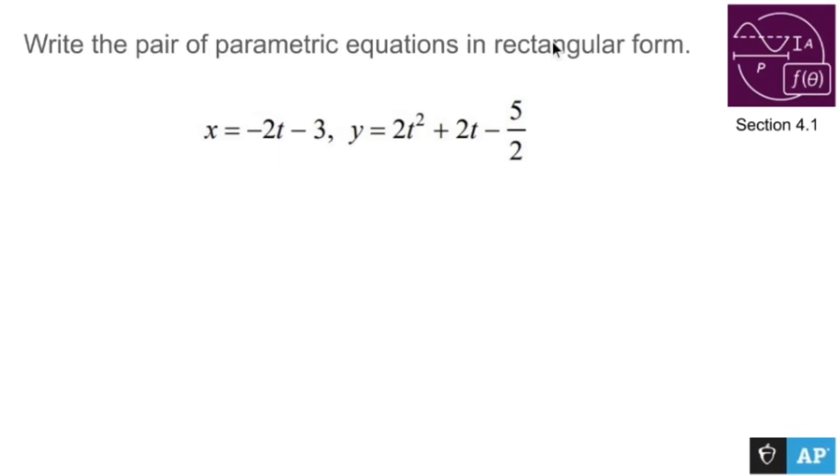Write the pair of parametric equations in rectangular form. Well, rectangular form is y equals stuff. So what I really need to do is I need to replace t with x's. How do I do that? Take this guy and solve it for t.